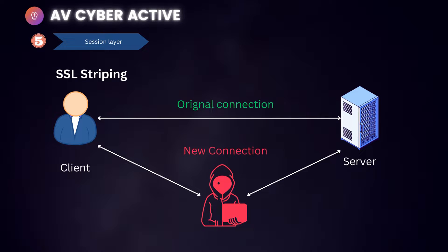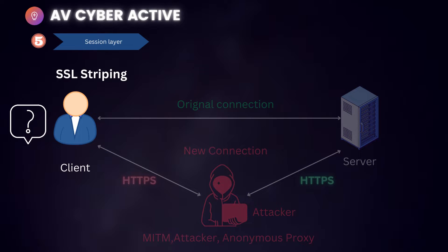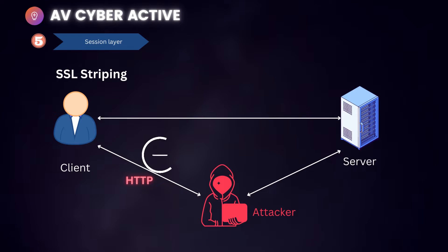At this point, the attacker's machine and the server have an encrypted SSL connection. The web server responds with an HTTPS URL, but instead of it going to the client it goes to the attacker. The attacker then downgrades the HTTPS to HTTP and forwards it to the client. The client has no idea what's happening in the background, nor any way to confirm the authenticity of the data received. As the SSL encryption has been stripped, anything the client inputs — passwords, credentials, credit card numbers, etc. — will all be sniffed by the attacker.